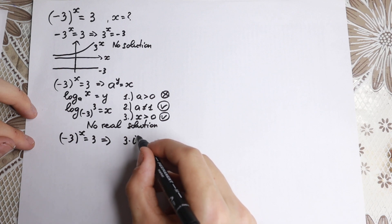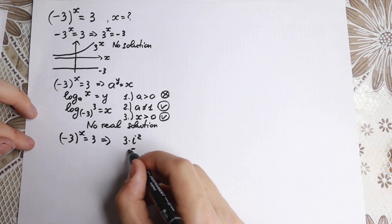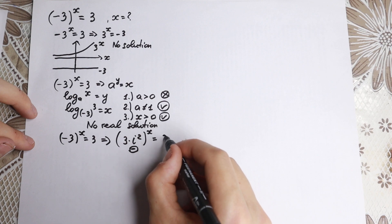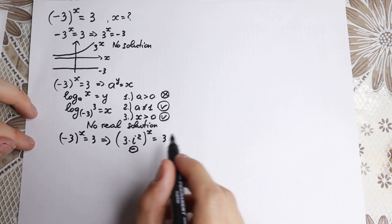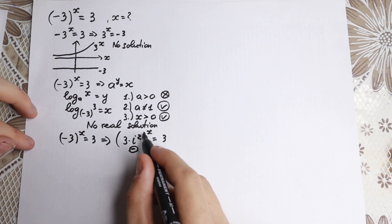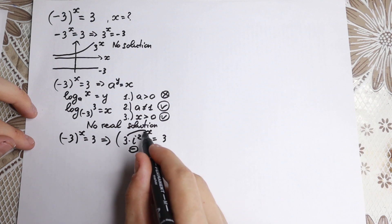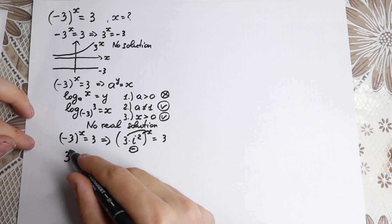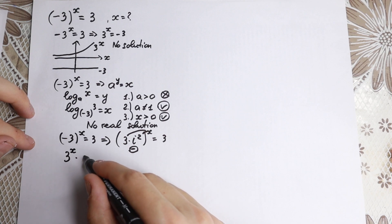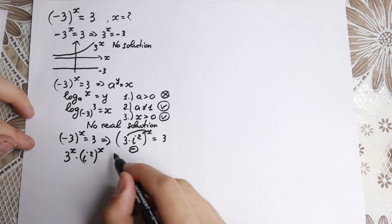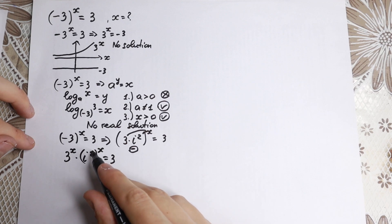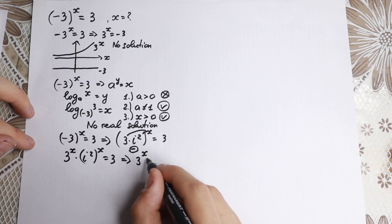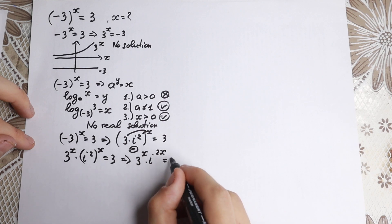So we have 3 times i squared, raised to the power x, equals 3. Now, if we have a times b to the power x, we raise each factor to the power x separately and multiply. Applying this rule, we get 3 to the x times i to the power 2x equals 3. We now have a useful form with the complex variable included.